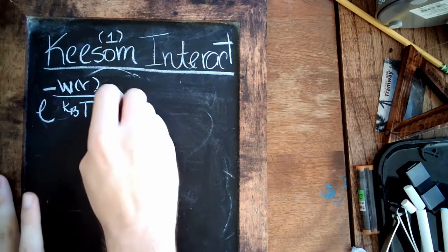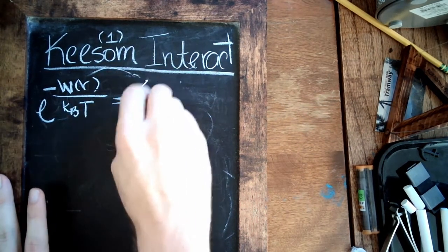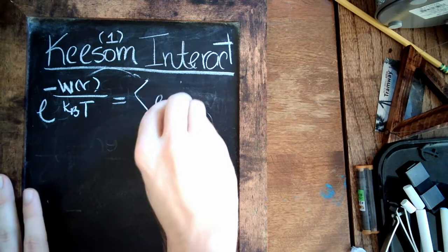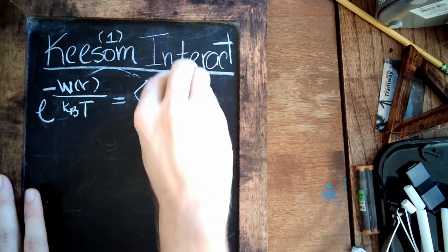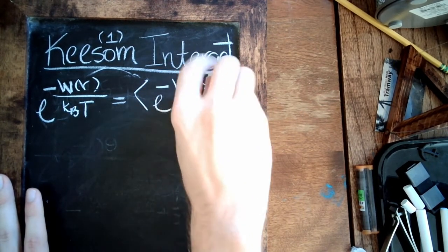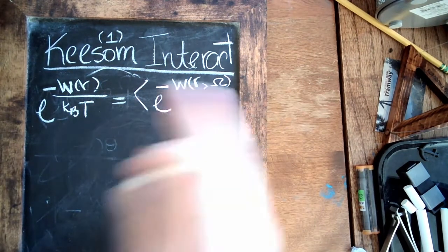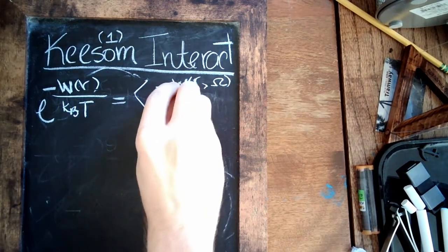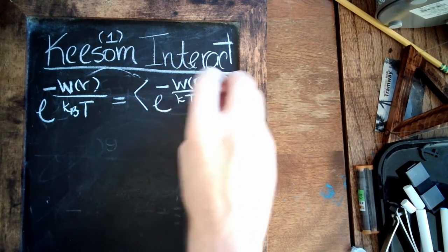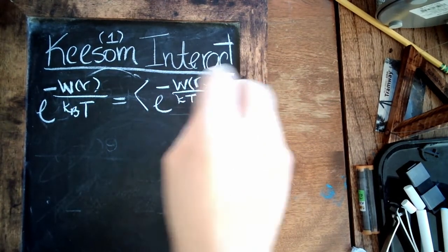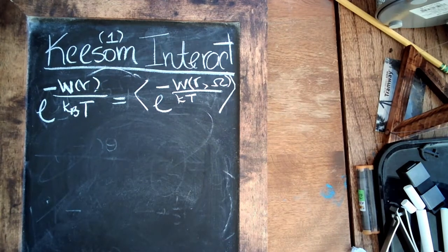And we're going to say this would be equal to the average over angle of r, omega—omega here, the solid angle, is going to represent theta and phi—over kT. Now a lot of times we drop the b, but that k is still the Boltzmann constant.